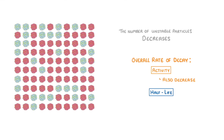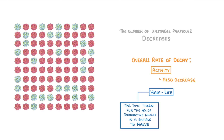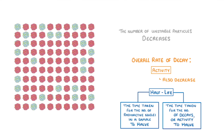This is why we can define half-life as a halving of either the number of radioactive nuclei remaining, or a halving of the activity. They are both perfectly correlated, because fewer radioactive nuclei means a lower activity.